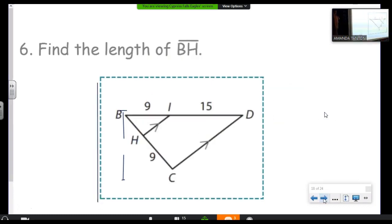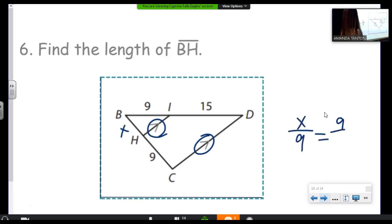The length of BH. Another very basic one. We're always, we should always be checking for those parallel lines, which I haven't done every problem. Always be checking for those parallel lines. X is to 9 as 9 is to 15. Okay. 5.4 or 27 fifths. Either one of those will work.